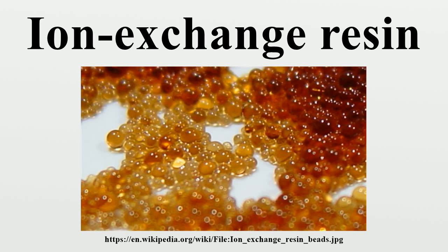In chemistry, ion exchange resins in the acid form are known to catalyze organic reactions. Ion exchange resins are also used in the manufacture of fruit juices such as orange and cranberry juice, where they are used to remove bitter-tasting components and improve the flavor, allowing tart or poorer-tasting fruit sources to be used for juice production.